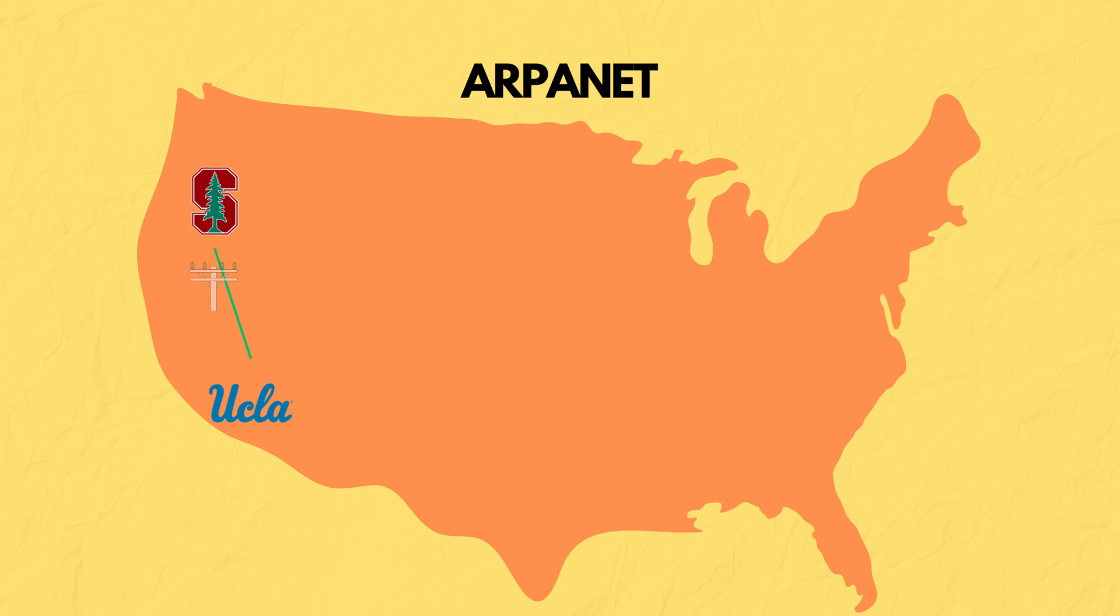And want to know how they were able to send data from Stanford all the way to UCLA? They used telephone lines. Why? Because they were already everywhere. Their infrastructure was already set up.